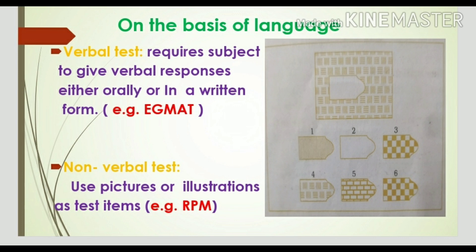Intelligence tests on the basis of language are divided into three categories: verbal tests, non-verbal tests, and performance tests. Verbal tests require the subject to give verbal responses either orally or in written form, so they are meant for literate people only. An example is GMAT, the General Mental Ability Test.